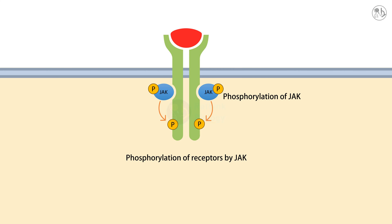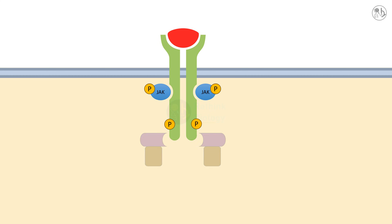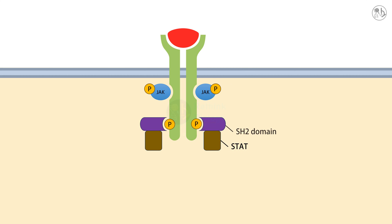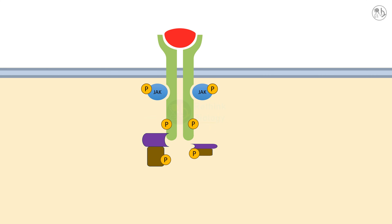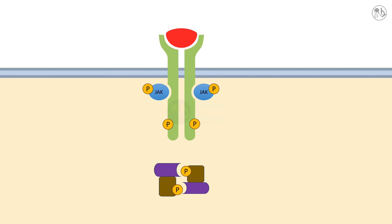This also creates docking sites for proteins called STATs, which have a special domain called SH2. JAKs then phosphorylate STATs. The phosphorylated STATs then dissociate from the receptor and form dimers with other STATs.